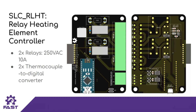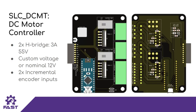All of the slices have a four-letter indicator which tells you their functionality. This is RLHT, the relay heating element controller. On it are two relays which can host a heater up to 250 volts AC and 10 amps, and then two thermocouple-to-digital converters for temperature sensing, so you could control two heaters with this slice. Next is DCMT, the brushed DC motor controller. On it are two H-bridges, so you could host a DC motor up to 3 amps and up to 55 volts. You can choose to use either a custom voltage up to 55 volts or the nominal 12 volts from the loaf to control your motors. There are also two optional incremental encoder inputs for precise position control.